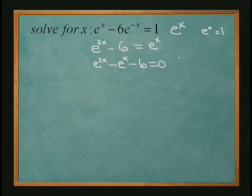Now, if you kind of look here, it looks like a quadratic. You know, the ax squared plus bx plus c equals 0.